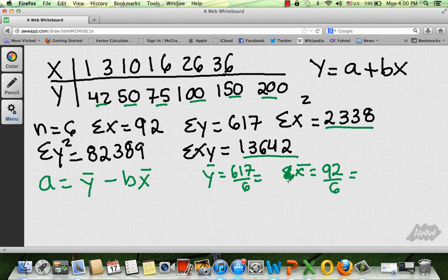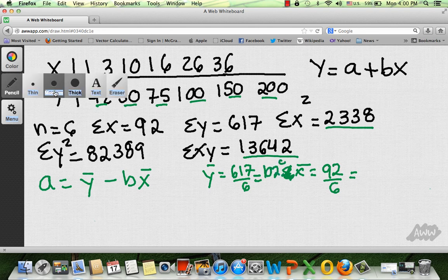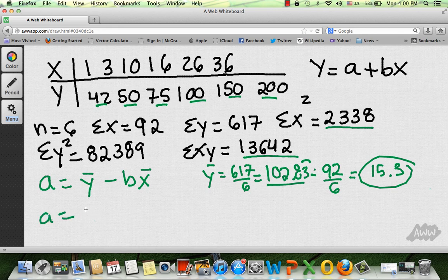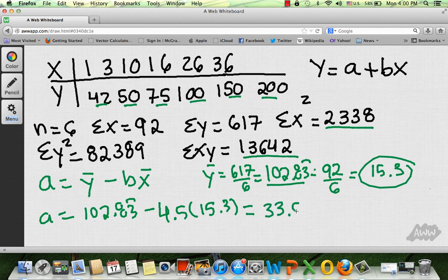So these two values are going to be, this one is going to be 102.83. Let me go ahead and make this a little bit clearer. A little magic brush here. So this is going to be 102.83 repeated and then this one is going to be 15.33. So a is going to be equal to 102.83 repeated minus b, which we found to be 4.51 times x bar, which is 15.33. And that is going to be equal to 33.83.